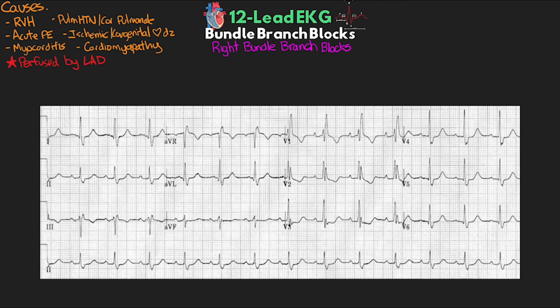Here's a second example. Looking at V1, it's clear the QRS is greater than 0.12 seconds or three small boxes. Evaluating V1 further, we again have that classic rabbit ears or M shape with the terminal wave deflected up or positive, along with a discordant negative T wave deflection. Using our turn signal method, we know we're turning right — thus right bundle branch block. Our terminal wave in V6, as well as leads 1 and AVL, are deflected negatively, opposite of what we have in V1.